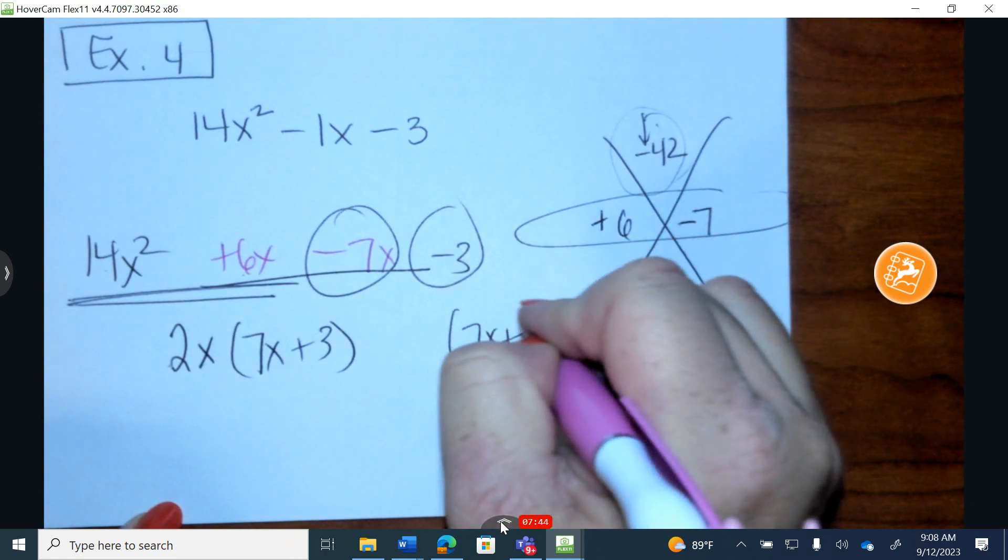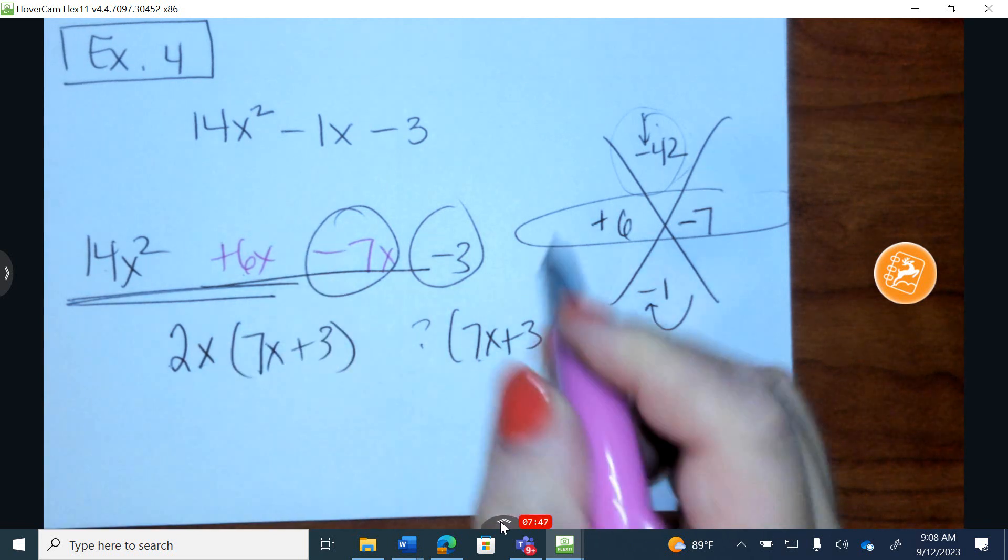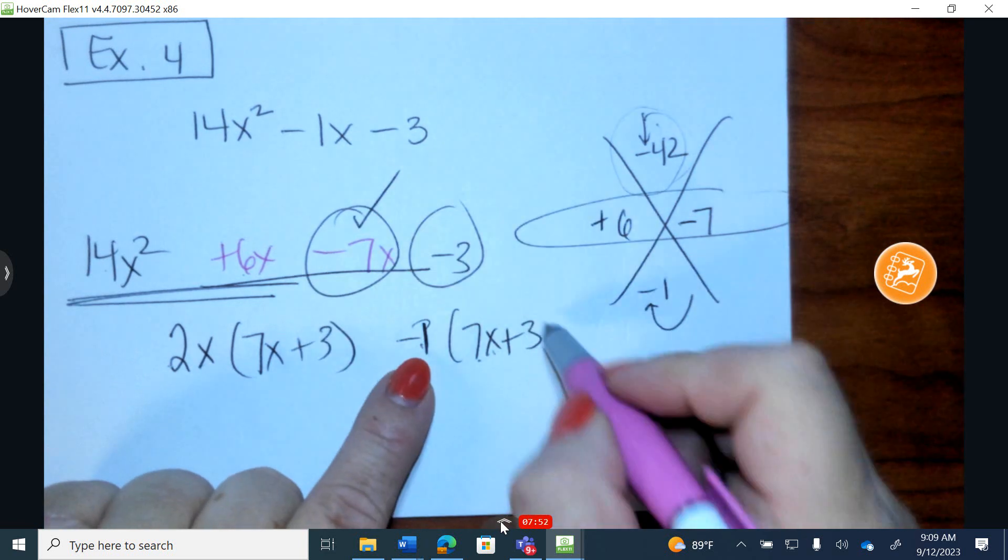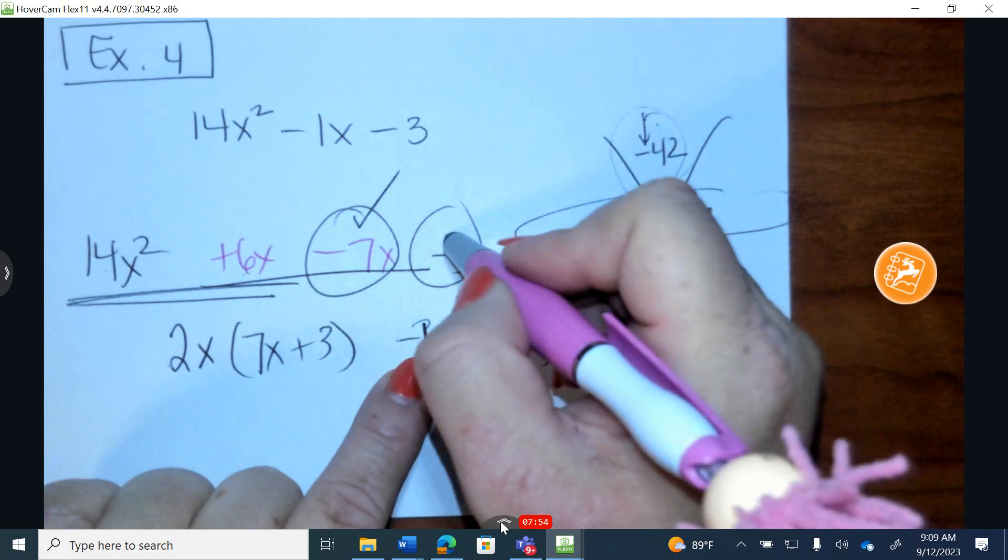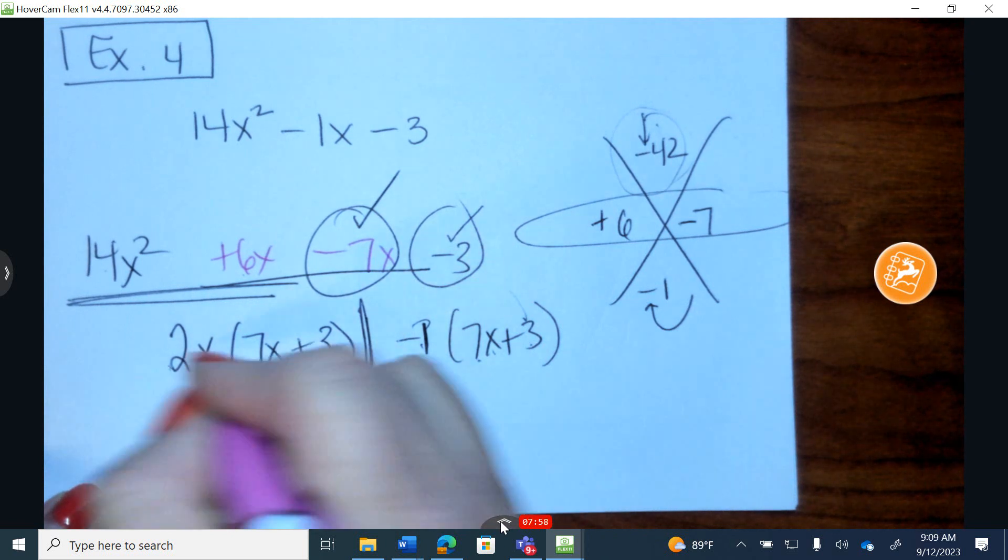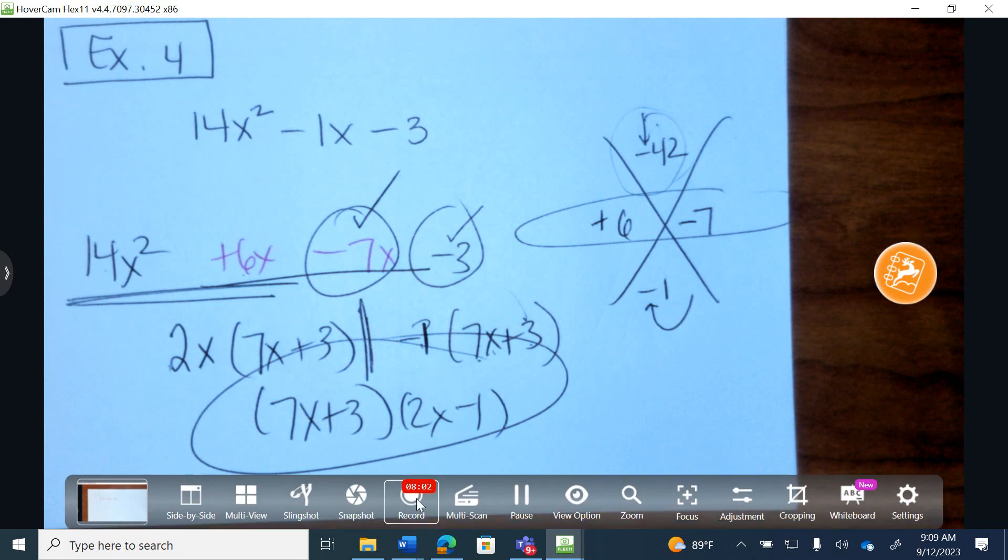I'm going to rewrite the parenthesis in back. What times 7 gives us a negative 1? Negative 1. So this is negative 7x. Confirm. This is negative 3 when I multiply. Confirm. They both have a 7x plus 3. In front of the first is 2x and in front of the back is a negative 1.